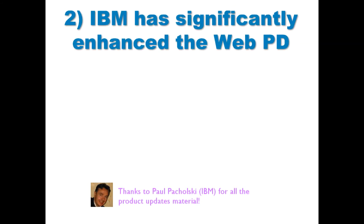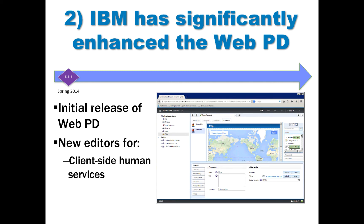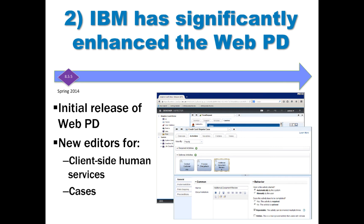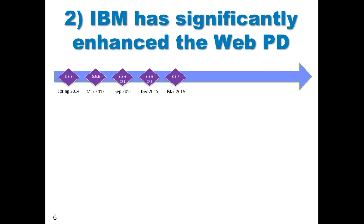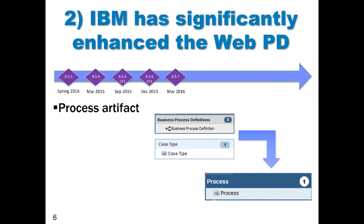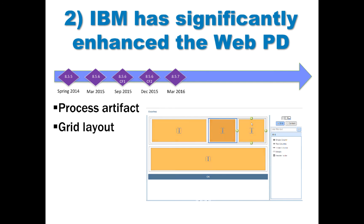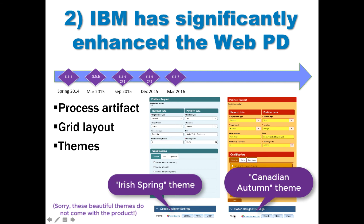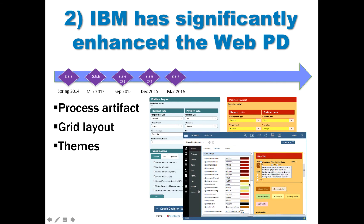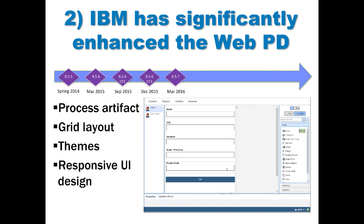Let me spend some time going through the enhancements to the web PD over the last few years. Back in 2014, BPM 8.5.5 was the initial release of the web PD — it contained new editors for client-side human services and cases. Fast forward a few releases to BPM 8.5.7 in 2016, which gave us the process artifact, merging the BPD and case artifacts together. We also have grids, which allow you to lay out the content of your screens easily. There's also support for responsive UI design, allowing you to define within one coach how it looks for a large screen as well as for a small mobile screen.